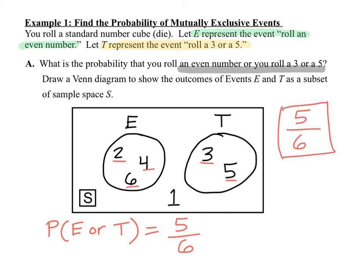With probability, we can leave it as a fraction, but you may also be asked to express it as a percent or decimal. To do that, take your calculator and do 5 divided by 6. As a decimal, you'll get 0.83 repeating. If you want to switch from a decimal to a percent, move the decimal two spots to the right — that's 83.3 repeating percent. So all three of those values represent the probability of rolling an even number or a 3 or a 5.